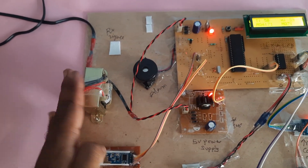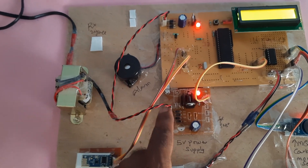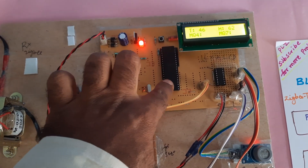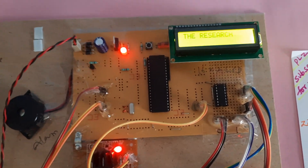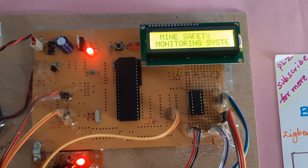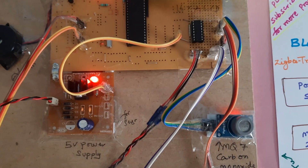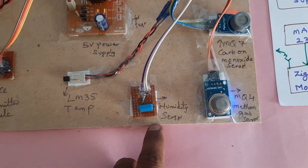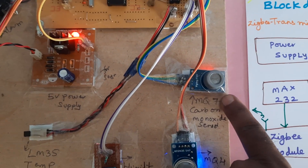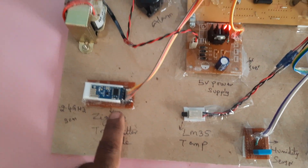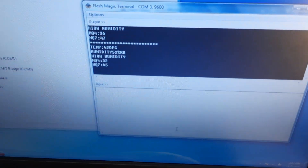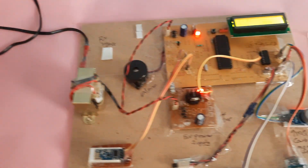Once again, the hardware overview: 230V input, step-down transformer, 9-volt output, 5-volt power supply module, 8051 S52 microcontroller, reset button, LCD display, MCP3208 ADC, LM35 temperature sensor, humidity sensor, methane sensor, MQ7 carbon monoxide sensor, Zigbee transmitter module, alarm, and Zigbee receiver module connected to the PC hyper terminal software. Thank you.